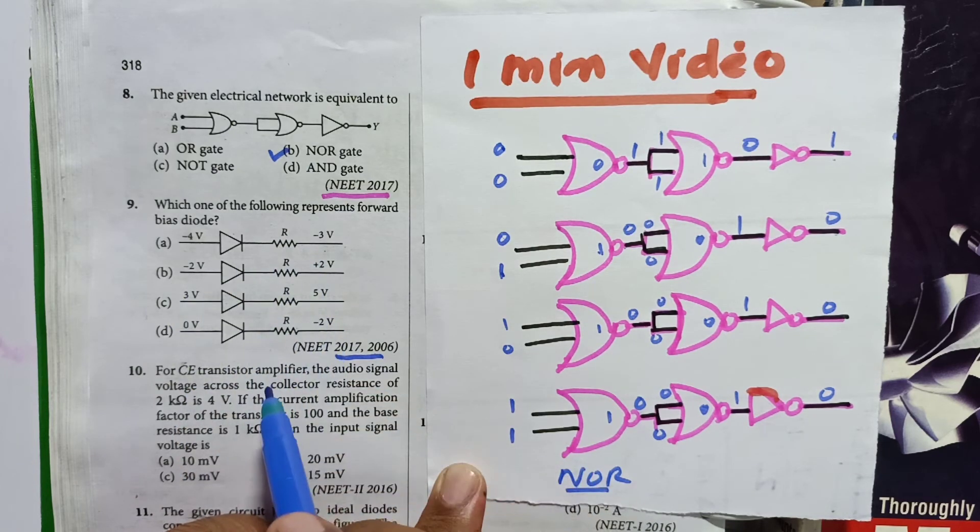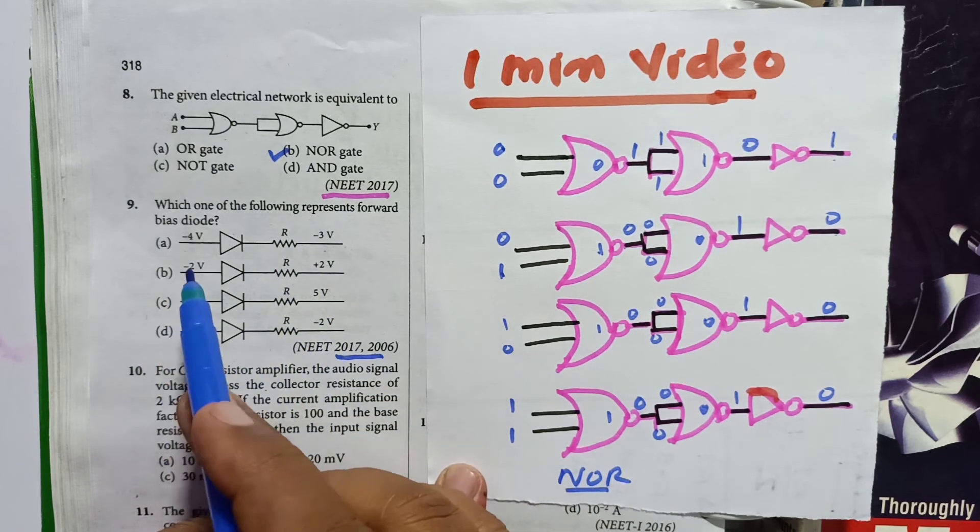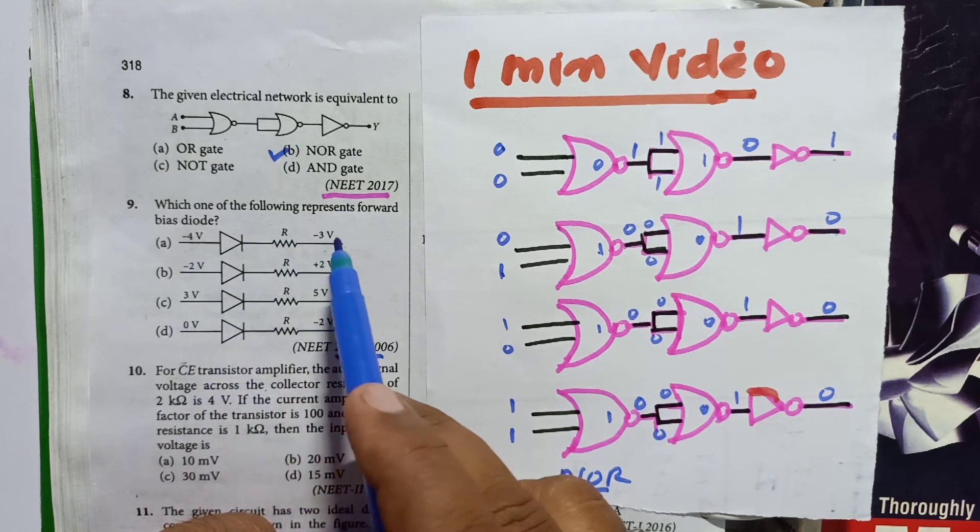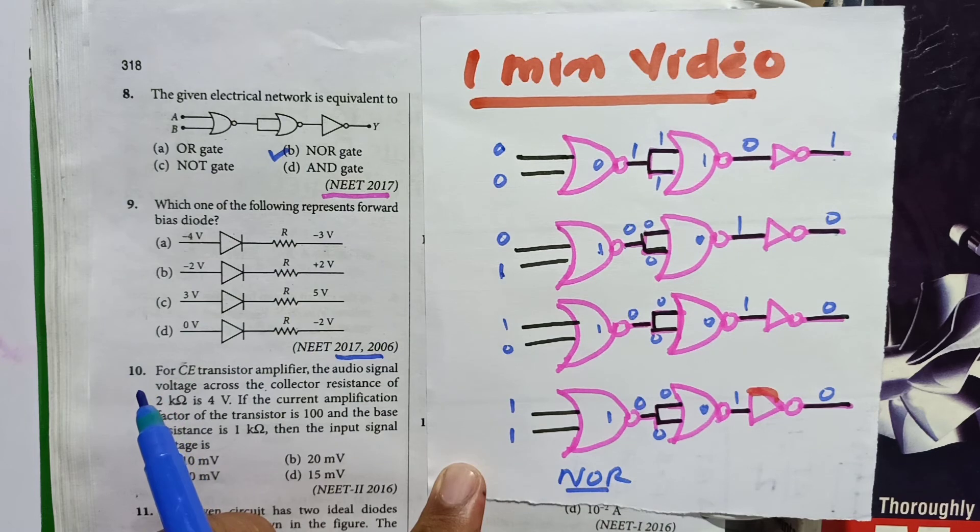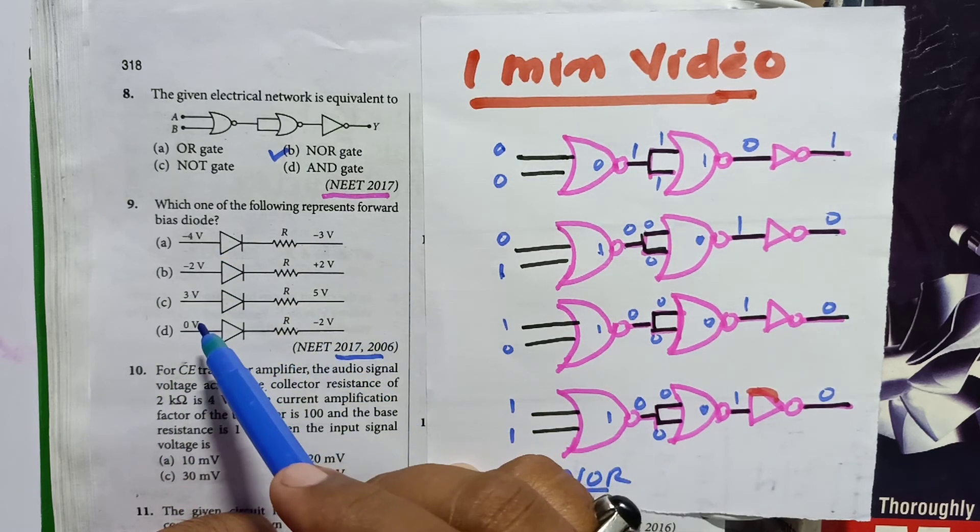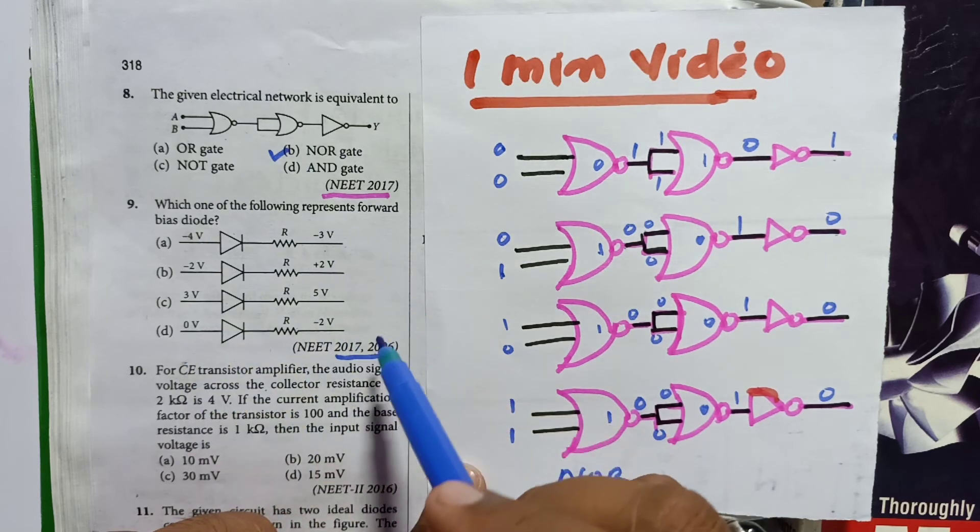Next you can learn this problem which is just below, it is very simple. So he is asking to find out which of the following is in forward bias. Forward bias means input should be high and output should be low. Forward bias means input should be high and output should be low.